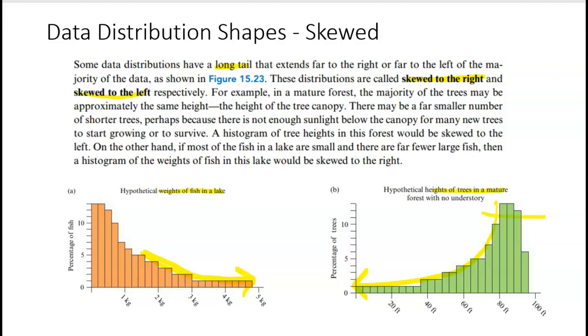If we're talking about heights of a tree, the majority of trees may be about the same height, but maybe there's not enough sunlight for those new trees, so it may be skewed to the left. A histogram would be skewed to the left. But if most fish in a lake are really small and there are far fewer large fish, then the histogram would be skewed to the right.